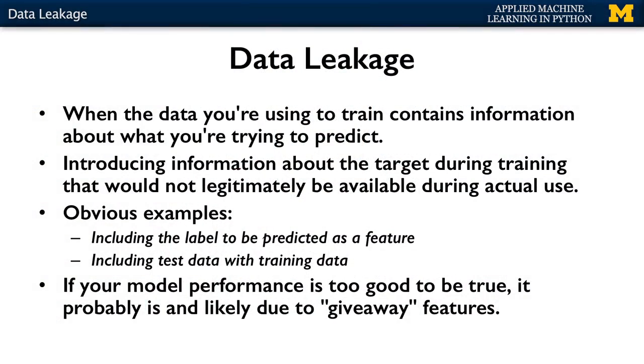Data leakage can happen for many other reasons too, often in ways that are quite subtle and hard to detect. When data leakage does occur, it typically causes results during your model development phase that are too optimistic, followed by the nasty surprise of disappointing results after the prediction model is actually deployed and evaluated on new data. Leakage can cause your system to learn a suboptimal model that does much worse in actual deployment, with real-world implications ranging from financial costs to system failures that hurt customers' perception of your system's quality or impact the company's brand.